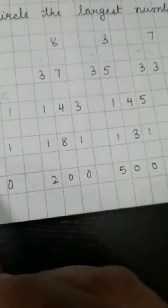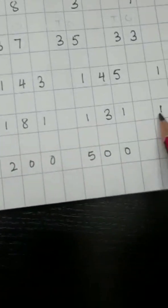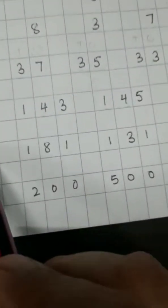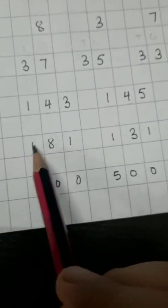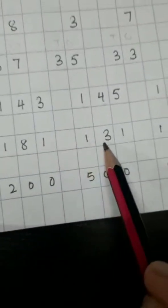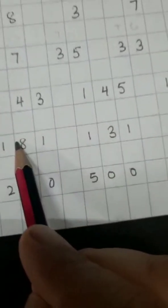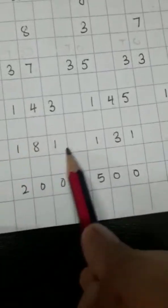Now, next question is, again, see, over here, the place value is same. In the, in 100's place, see. 1, 1, 1, 1. Now, what we will do? We will see 10's, right? 161, 181, 131, 121. So, 8 is bigger, right? So, we will encircle this number because this is the largest in this group.